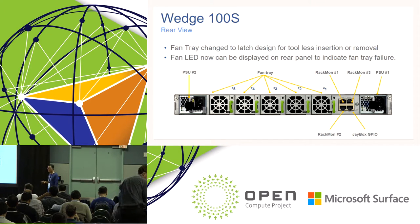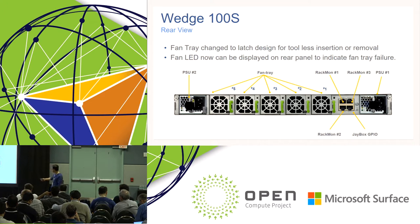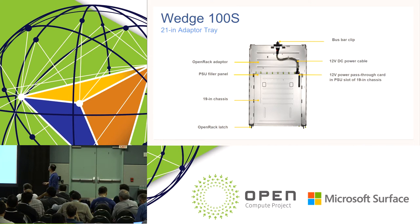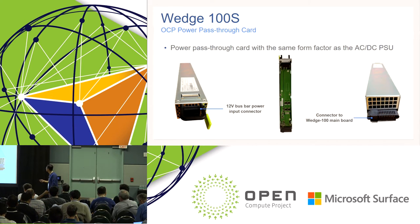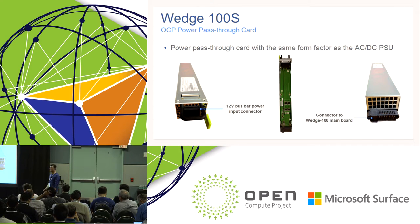There are three rack mount ports — basically serial ports with RS-485 physical signaling — connected to the rack power supply unit in OpenRack V2. There is also a JBOX GPIO port with multiple general-purpose IOs controlled by the BMC. The 21-inch adapter tray has a 12V DC power cable that connects to the rack power bus bar, and a 12V power pass-through card inside the 19-inch chassis. This power pass-through card has the exact same form factor as the AC/DC PSU. By designing this card, we can use this box in both 19-inch and 21-inch racks without modifying the box itself.